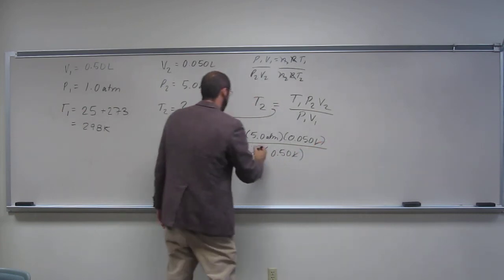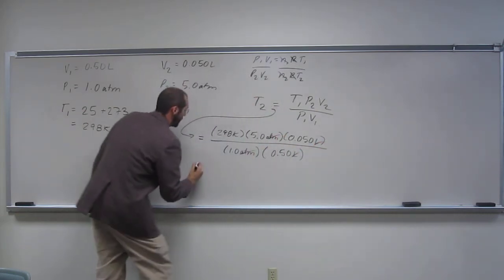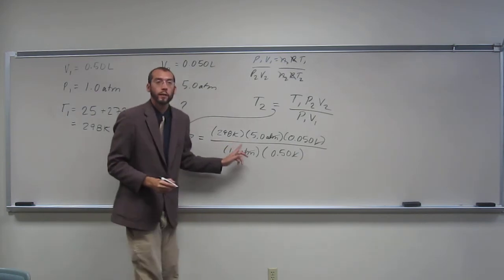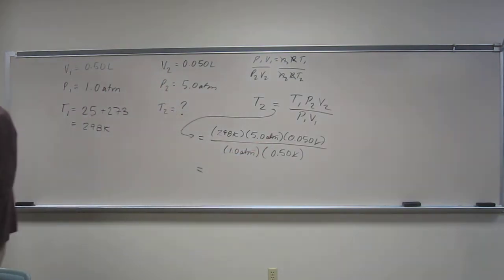So liters cancel, ATM cancel, and what do we get for units? Kelvin. So that's hopefully good units for temperature, right? So 298 times 5, times 0.05, divided by 1, divided by 0.5.